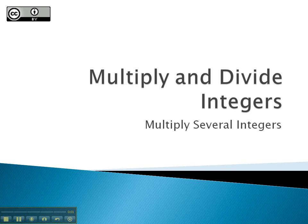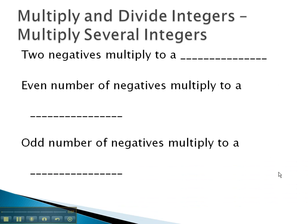In this video, we're going to take a look at how we can multiply several integers together using a pattern that we found with multiplying two negatives together. When we were multiplying two negatives, because we had the same sign, we said two negatives would multiply to a positive.